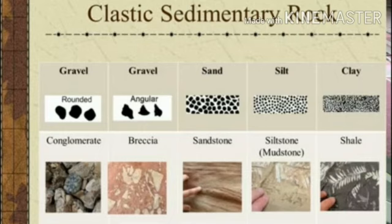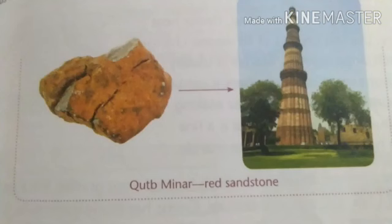Sandstone is formed with very fine particles of sand cemented together by other minerals. Sand consists of a mineral called quartz. Sandstones may be red, pink, brown or yellow in colour. They are used as a building material. The famous monuments such as Red Fort and Qutub Minar are made up of red sandstone.